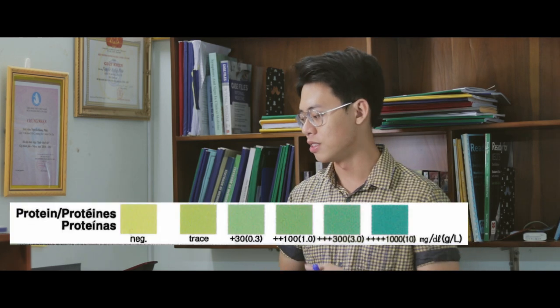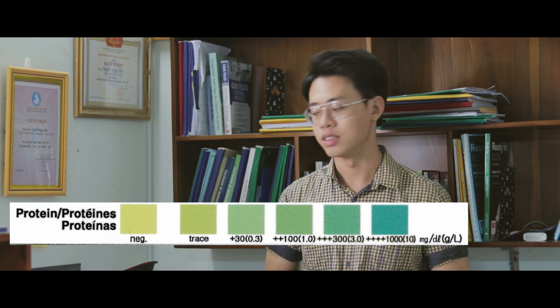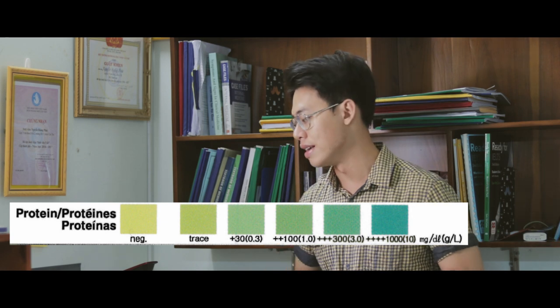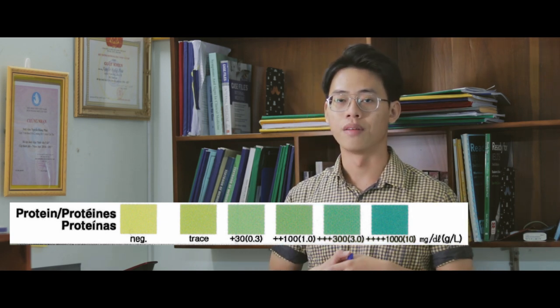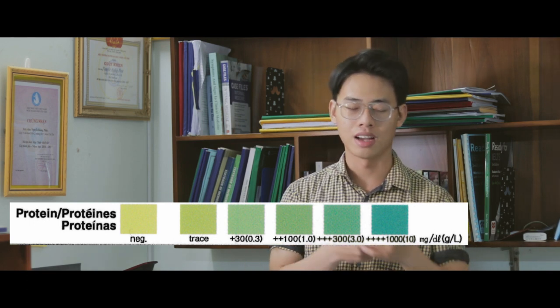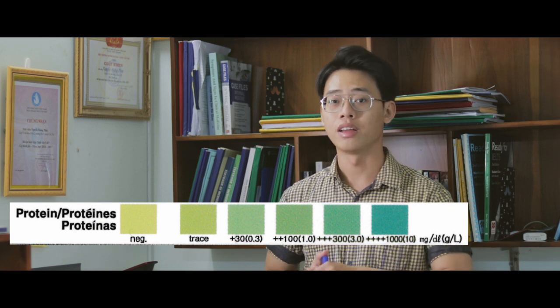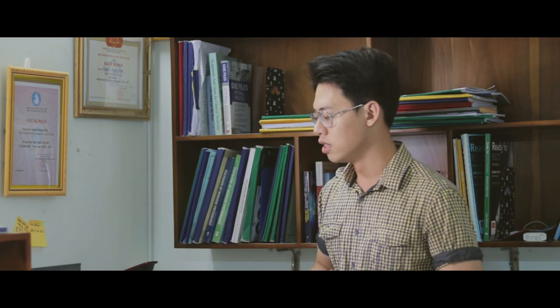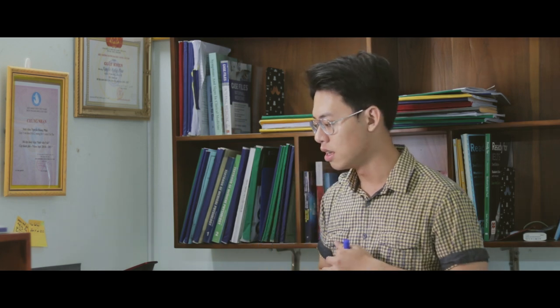The next parameter is protein. Normally urine does not contain any protein because protein is very large in size and weight and cannot cross the holes on the filtration membrane of Bowman's capsule — partly because of size and partly because of the negative electric field. Therefore the presence of protein in the urine is abnormal. The dipstick test is more sensitive to albumin than to other types of protein, so a negative result cannot exclude the presence of other proteins.